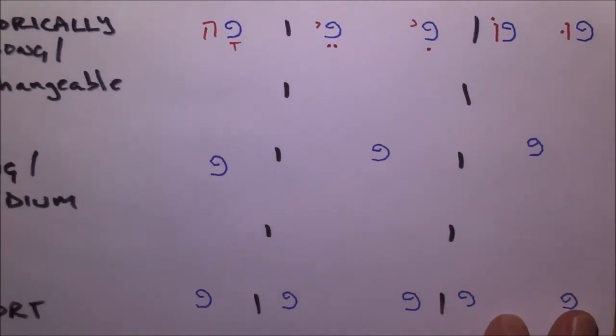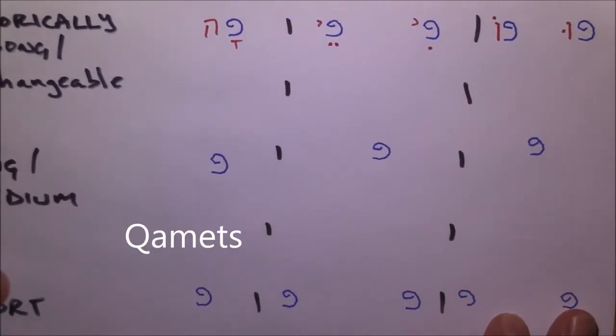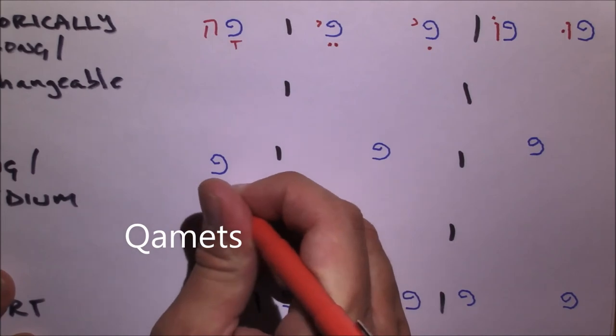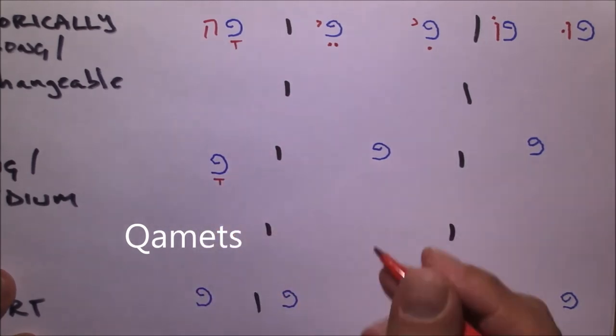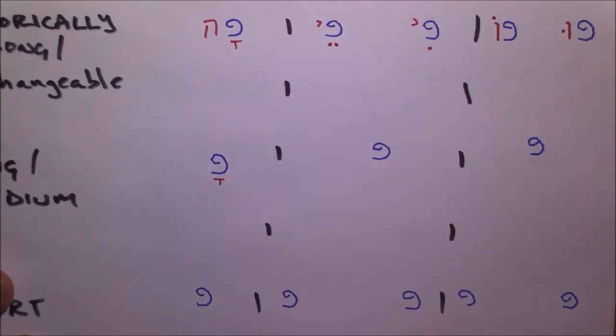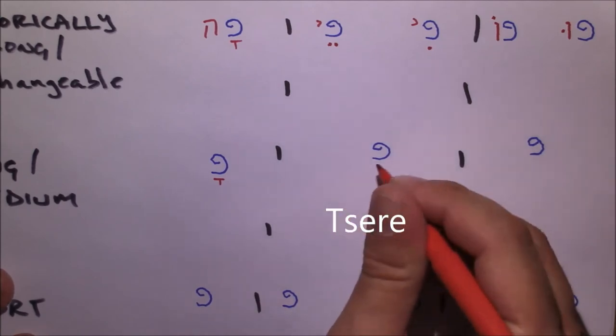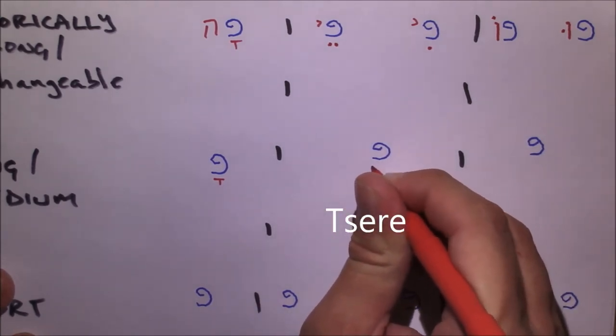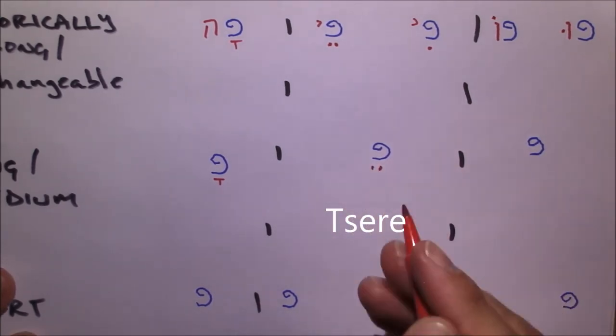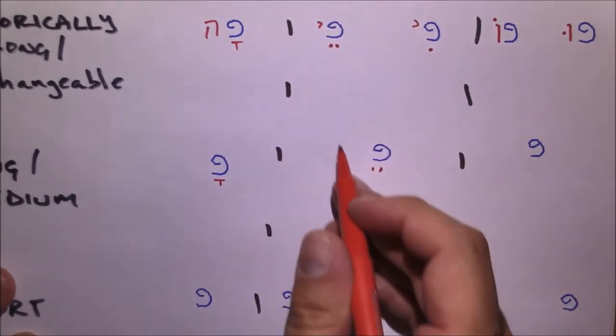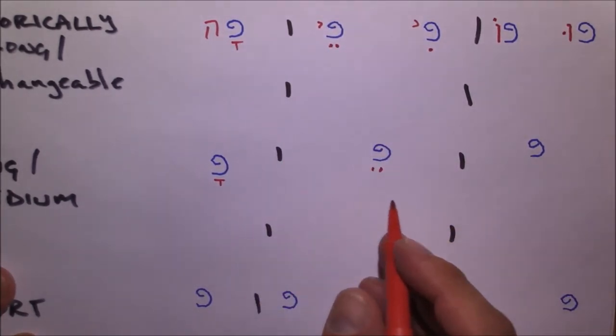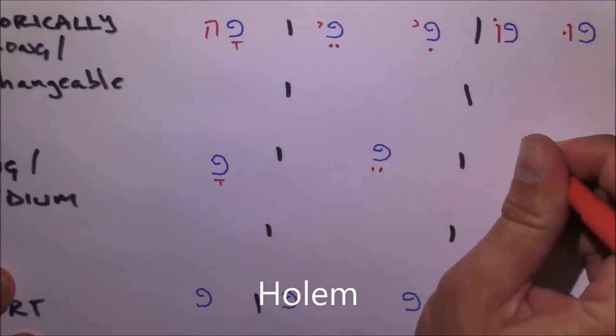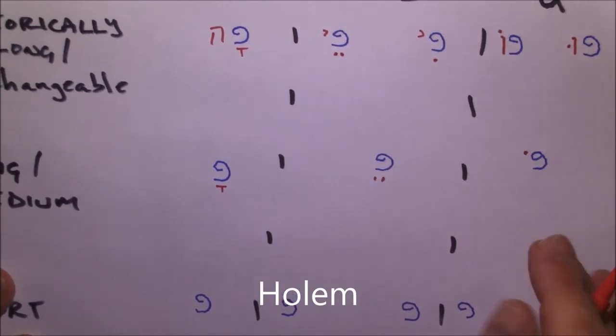In our long and medium category, in the A class, we have our kamatz. And this is a. In our I class, we have our tsere, and this is a, again pronounced the same as the tsere yod. And in our U class, we have holum, which is o.